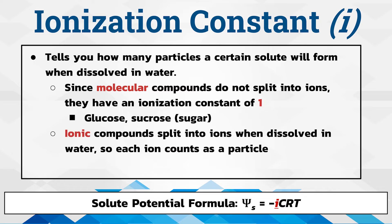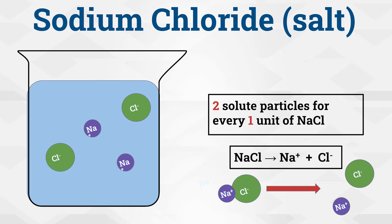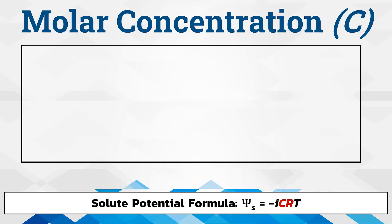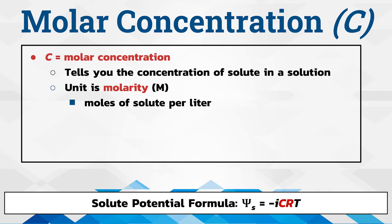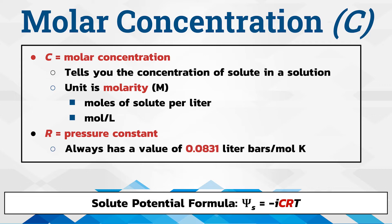When you place salt or NaCl into solution, it dissolves into its ions. For every one formula unit of NaCl, there are two particles in solution: the Na⁺ ion and the Cl⁻ ion, so the ionization constant is 2. C stands for the molar concentration, which tells you the solute concentration in molarity, or moles of solute per liter. R is the pressure constant, which always has a value of 0.0831 liter bars over moles Kelvin. Whenever you're working with water potential, you always plug this value in for R.